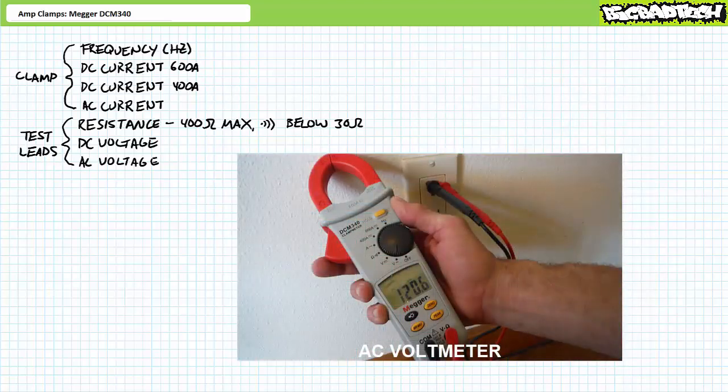In AC voltmeter mode, the Mega DCM340 demonstrates roughly 120 volts RMS appears from line to neutral in a residential AC outlet.